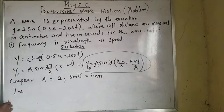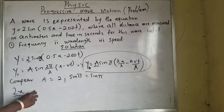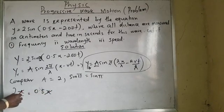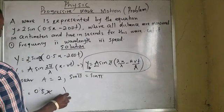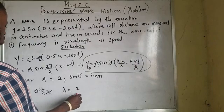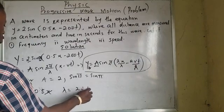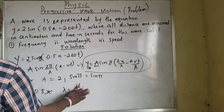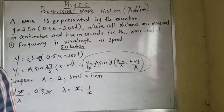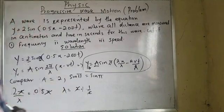I can also say that my 2x over lambda can be equal to 0.5x. With the x terms, we cancel x, and my lambda will be equal to 2 divided by 1 over 2. Do you know what I am trying to do? I just have this and have this.